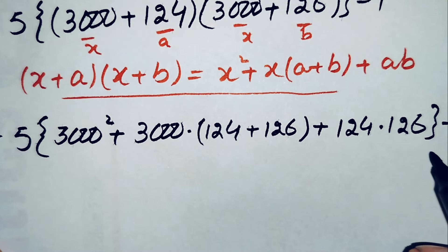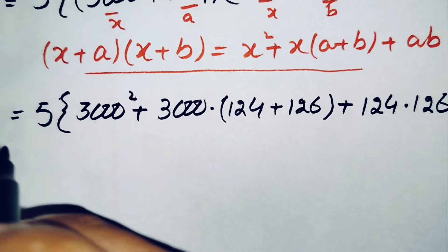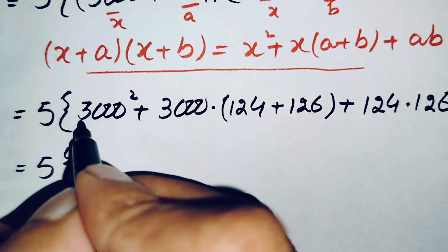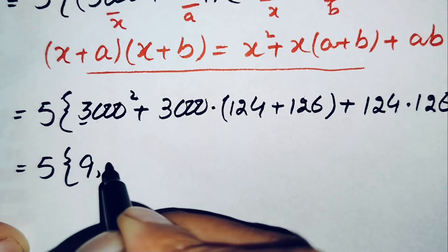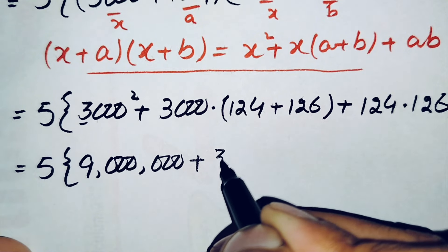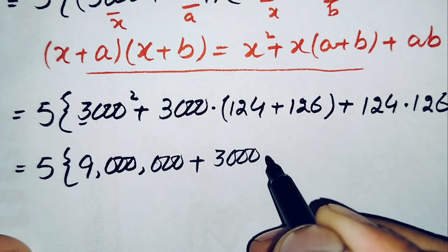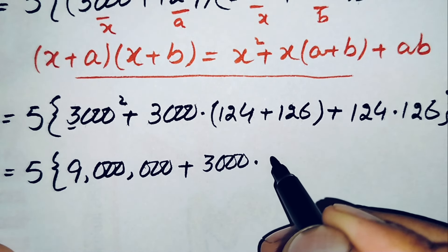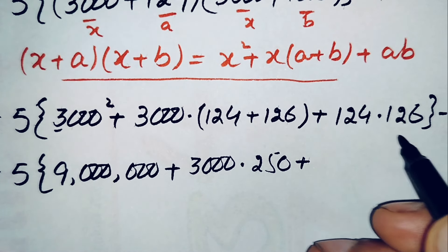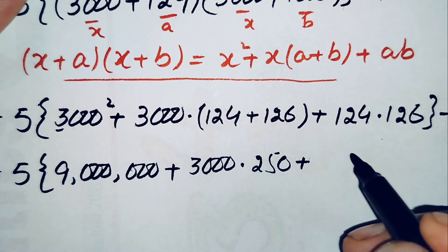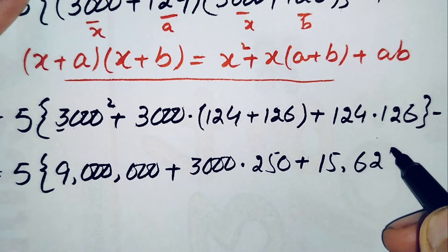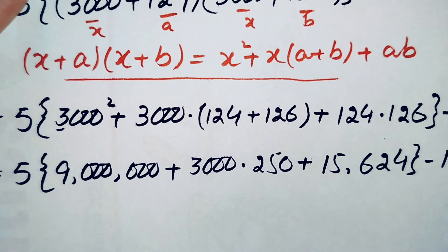We simplify the numbers inside the braces. 3000 squared is 9,000,000. Then 3000 times 250 gives 750,000. Multiplying 124 times 126 gives 15,624. The expression inside becomes 9,000,000 plus 750,000 plus 15,624, all minus 1.